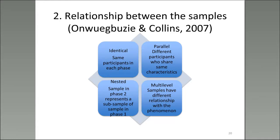Regarding the relationship between samples: identical means the same participants participated in both the quantitative and qualitative phases. Parallel means the participants differ but share similar characteristics — for example, all are teachers or all are principals. Nested means you take a subsample from the first phase to collect data in phase two. Multi-level means the samples have a different relationship with the variable of interest — for example, principals, teachers, parents, and students all share a perception about education but at different levels of engagement.